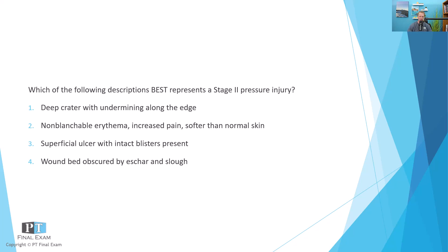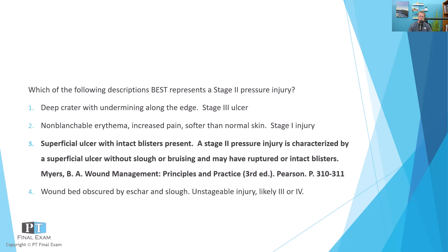This question is about the National Pressure Ulcer Advisory Panel's pressure injury staging model, used extensively by clinicians for examining pressure injuries. They changed the terminology a couple of years ago to reflect that not all injuries are ulcers — they're now described as pressure injuries rather than pressure ulcers, unless it has actually opened into an ulcer or open wound. The correct answer is number three: a superficial ulcer with intact blisters present. This is most representative of a stage two pressure injury.